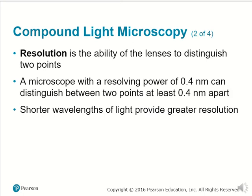The other term, in addition to total magnification, is resolution. Remember this term — it is the ability of the lens to distinguish two points of length. So a microscope that has a resolving power of 0.4 nanometers can distinguish something that is at least 0.4 nanometers in length. Things that involve shorter wavelengths of light, or in other words higher energy of light, provide greater resolution.